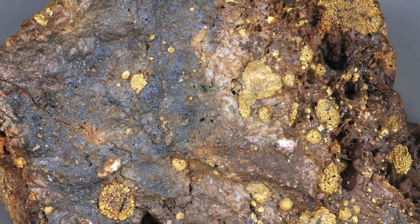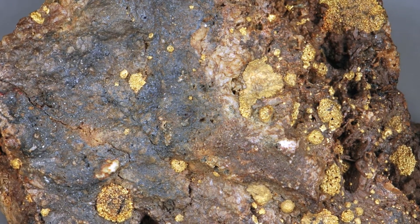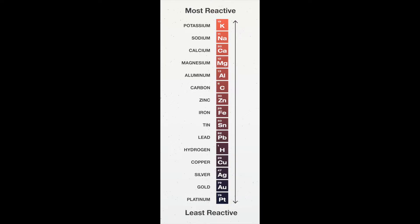We need to know about the reactivity series, because the way that we extract a metal depends solely on the reactivity series. As shown on your screen, the reactivity series places metals in the order of their reactivity. The most reactive goes to the top, so potassium goes to the top, and the least reactive goes to the bottom — so platinum, gold, silver — these are all very unreactive.